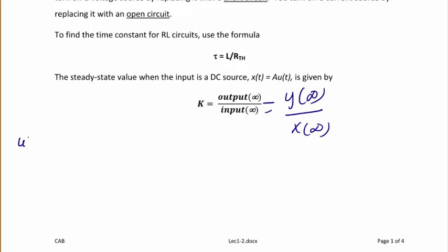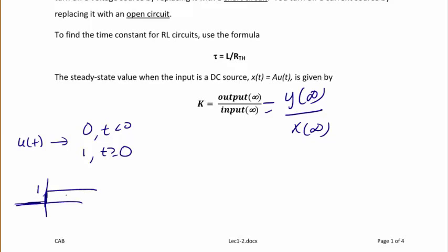Recall that u(t) is a step function. u(t) is equal to zero when t is less than zero, and one when t is greater than or equal to zero. It's called a step function because if you graph it, it looks like a step with an amplitude of one. Therefore, A·u(t) represents a step with an amplitude of A.